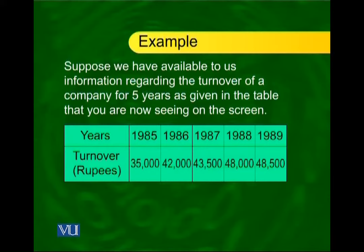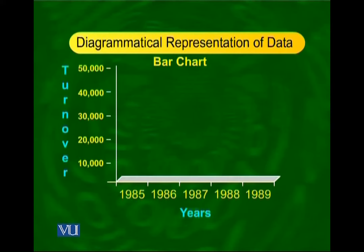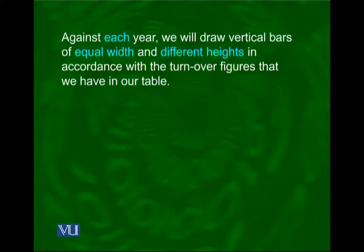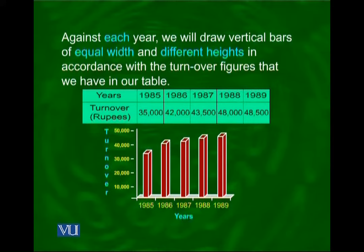If we want to represent this information on a bar chart, all we have to do is take the years along the x-axis and construct a scale for turnover along the y-axis. Next, against each year, we will draw vertical bars of equal width and different heights in accordance with the turnover figures. As a result, we obtain a simple and yet very beautiful diagram as you now see on the screen.